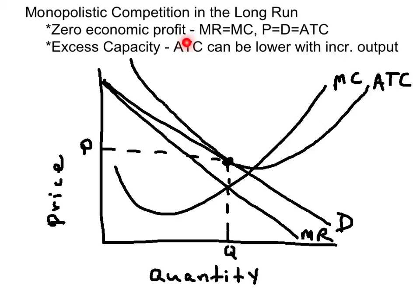Accounting profits will be positive because the accountant doesn't care about implicit costs or opportunity costs. To graph the long-run equilibrium,